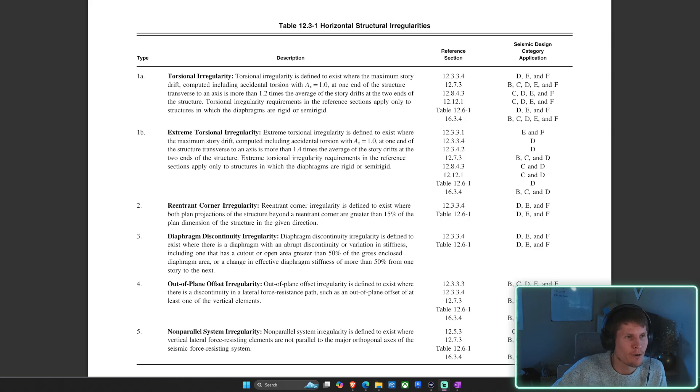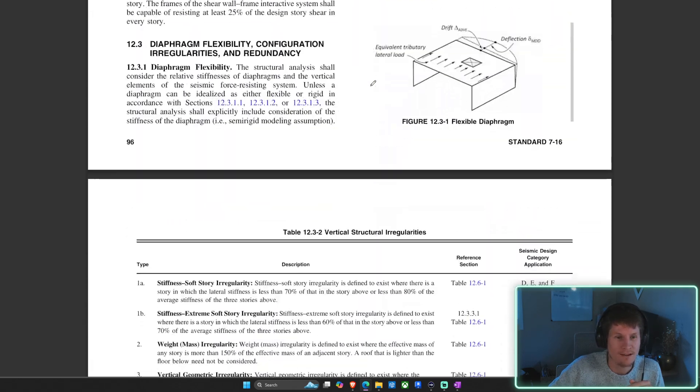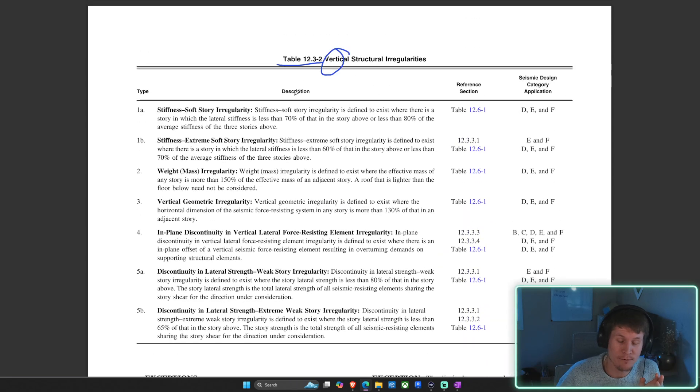Think about this for a second. Both of these tables look very, very similar, but this is actually not the correct table that you want to be in because this is horizontal irregularities. Today, we're talking about determining weak stories, which is about the vertical components of your vertical lateral system. So we want vertical irregularity checks. You're going to scroll down a little bit further and you're going to find, boom, vertical.